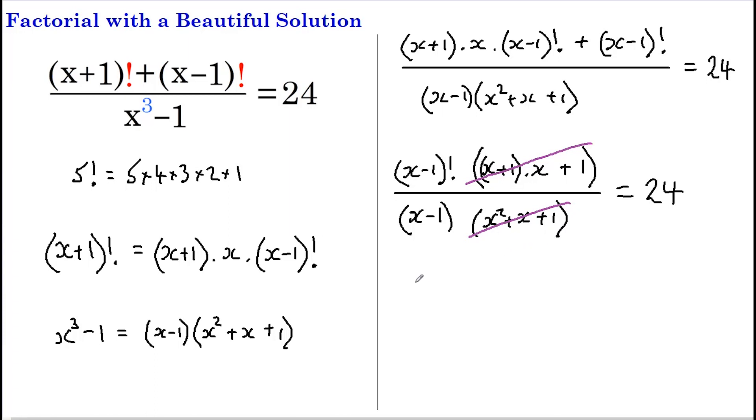So we've got just (x-1) factorial divided by (x-1), and 24 is actually 4 factorial, because 4 times 3 times 2 times 1 equals 24.